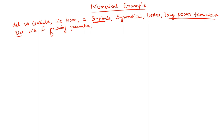Even though three-phase is not always mentioned, you should understand that long power transmission lines are all three-phase — never single-phase. So even if three-phase is not mentioned in a problem, assume it is three-phase. A lossless line means we ignore line series resistance and shunt conductance, that is R = G = 0.